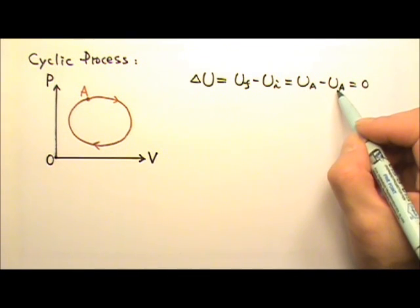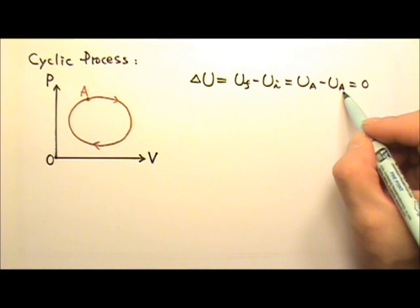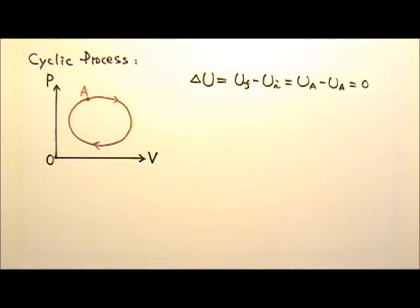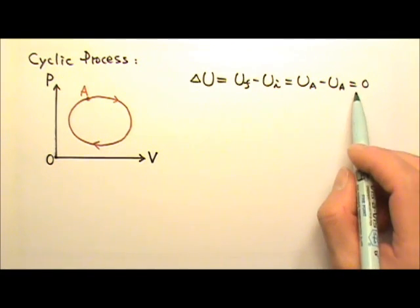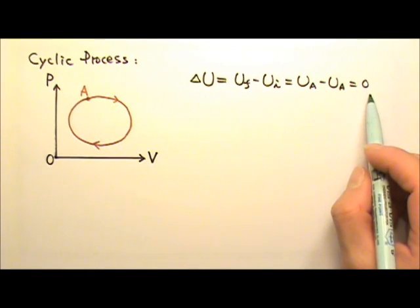Because U is a function of state, if it's the same state, the internal energy is the same amount. So if we have a cyclic process, the delta U is zero because it goes back to the starting state.